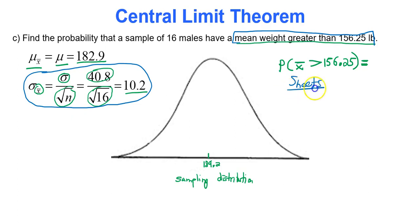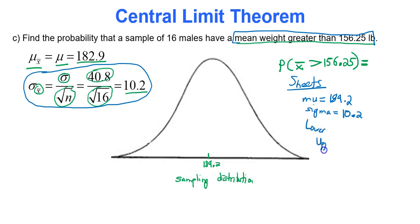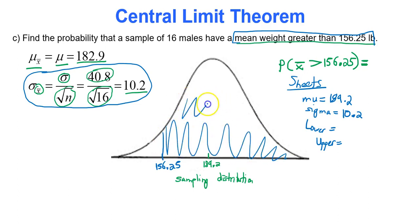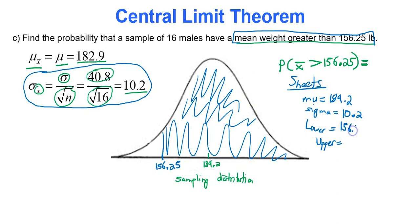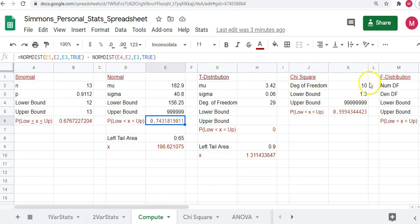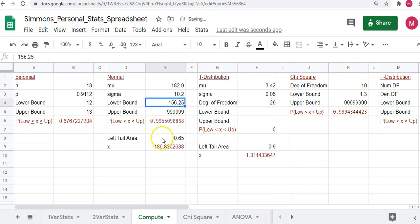In Google Sheets, type in mu as 182.9 and sigma as your adjusted standard deviation of 10.2 — the more decimal places you keep, the better. Your lower bound is 156.25 and upper bound is six nines, the same as the previous part except the standard deviation has been adjusted to 10.2. You get 0.9955.